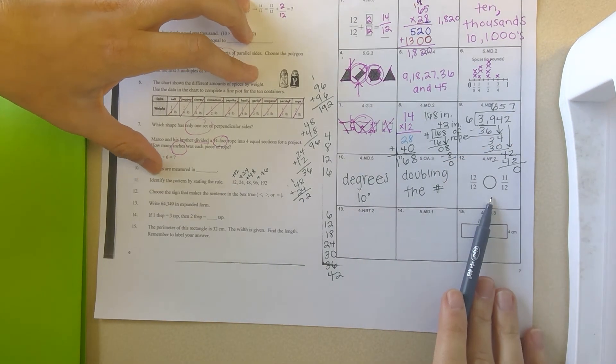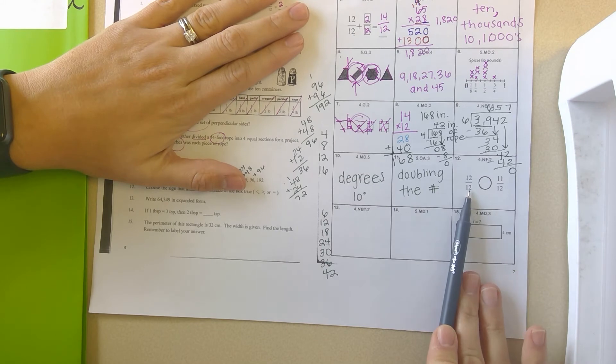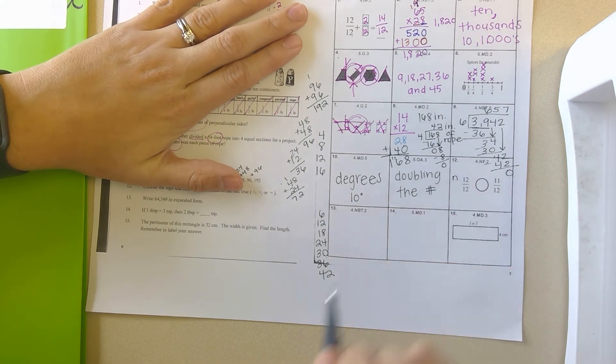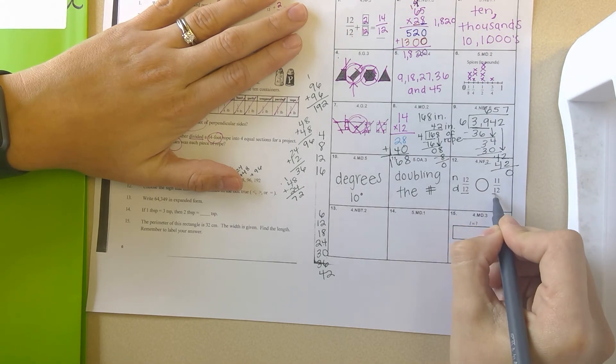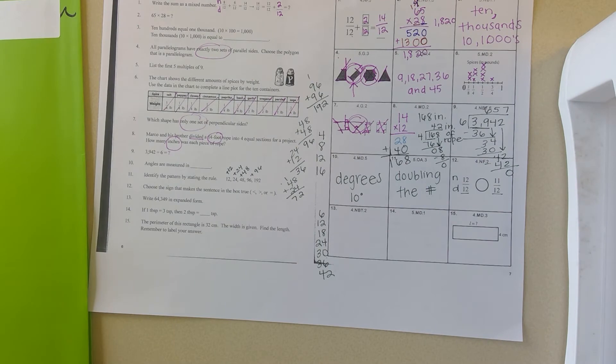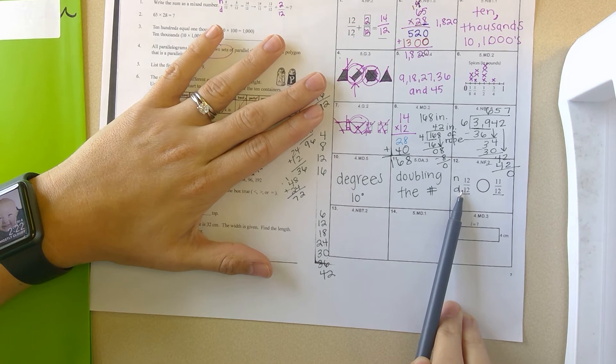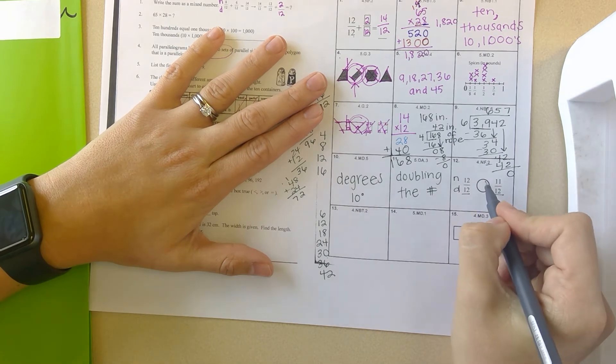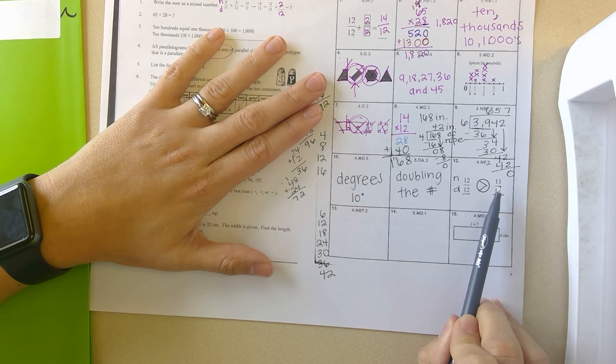Number 12. Choose the sum that makes the sentence in the box true. So we're going to say greater than, less than, or equal to. So let's go ahead and look. 12 twelfths is greater than, less than, or equal to 11 twelfths. Well, remember the top number on a fraction is the numerator. So I'm putting an N. The bottom number on a fraction is called the denominator. My denominators are the same size. So I know I'm dealing with the same size pieces. But would 12 twelfths be more, less, or the same as 11 twelfths? Well, I know 12 is more than 11. So this would be greater. So my symbol would be this. So you would say this as 12 twelfths is greater than 11 twelfths.